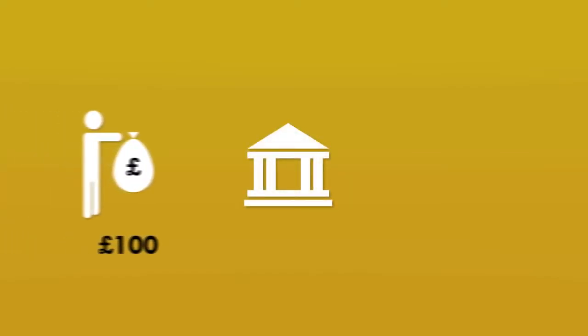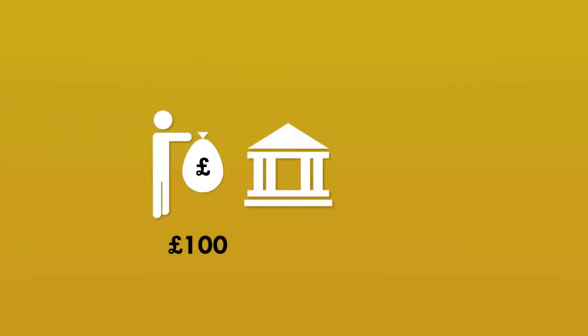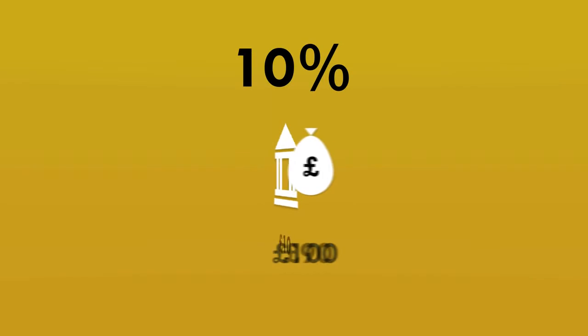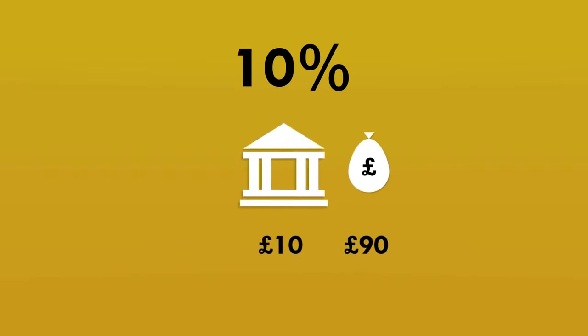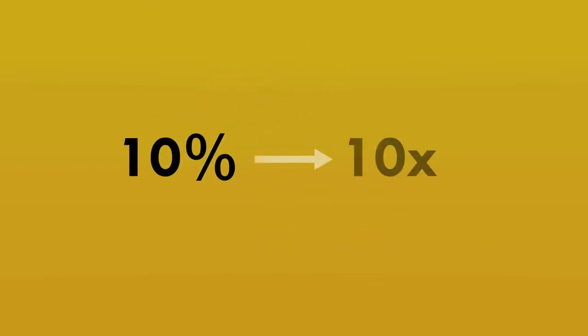So what actually limits how much money the banks can create? You've probably seen the standard multiplier explanation of fractional reserve banking that we discussed in an earlier video. In this model, the banks have to keep a percentage of their customers' money in reserve. The reserve ratio given is usually 10%, which means that for every £100 paid into a bank by customers, the bank must keep £10 in reserve somewhere. This means that the banks can only expand the money supply up to 10 times the amount of real government-created money.